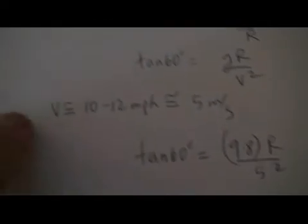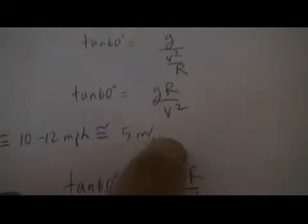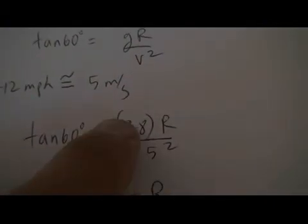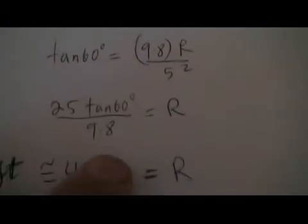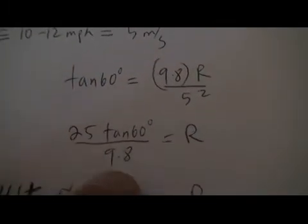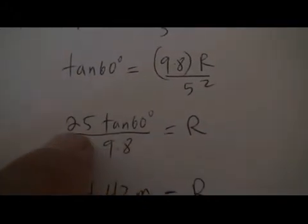Okay, so now what I did is I took the velocity, which is approximately 5 meters per second. I put it here into the equation of the velocity. I have 5 squared, 9.8r. Now I'm solving for r: tan 60 times 25 divided by 9.8. So that's the radius of curvature of the circle that the car was going in.